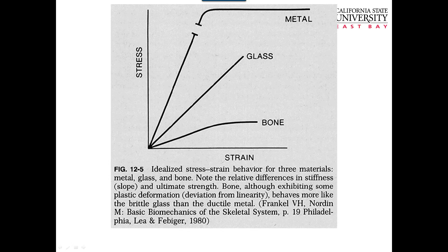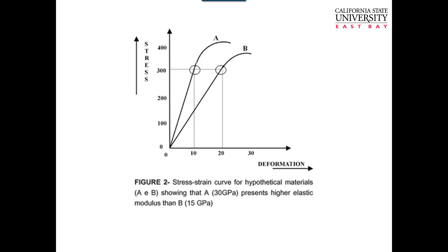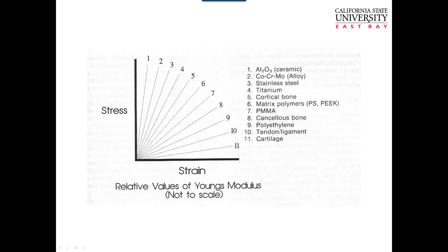This load deformation or stress-strain curve compares the strength and stiffness of bone versus glass versus metal. Bone has a little bit of a plastic region. Glass has no plastic region — it's very brittle. Metal has a huge plastic region. For further comparison: tissue A is more stiff, tissue B is less stiff and can undergo more deformation. That doesn't mean B is weaker than A — it's just a different strength profile. Titanium has higher stiffness, bone is less stiff, and cartilage is the least stiff of these tissue types.